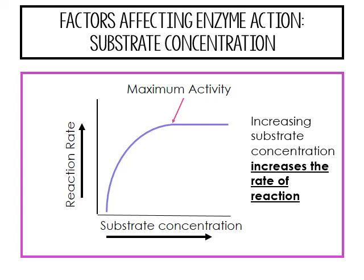The third factor affecting enzymes is substrate concentration. If you have a small amount of substrate, you won't have much reaction. But with a lot of substrate coming in, you'll have a faster reaction — until you reach a point where increasing concentration no longer makes a difference. So increasing substrate concentration increases the rate of reaction up to a plateau.